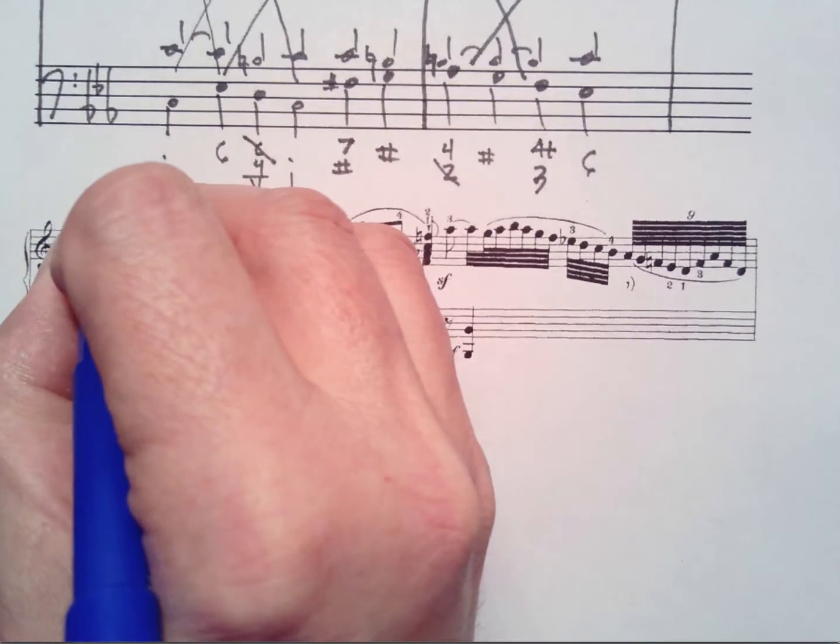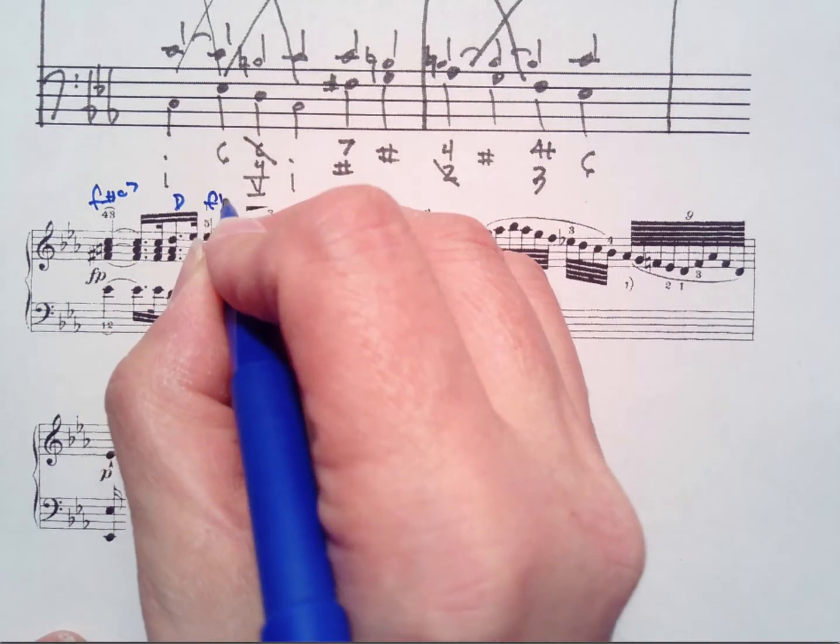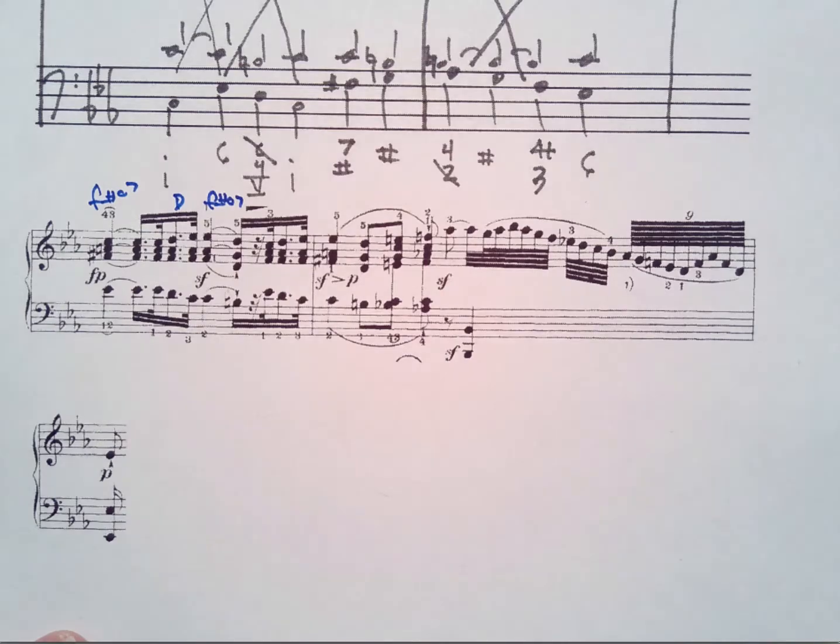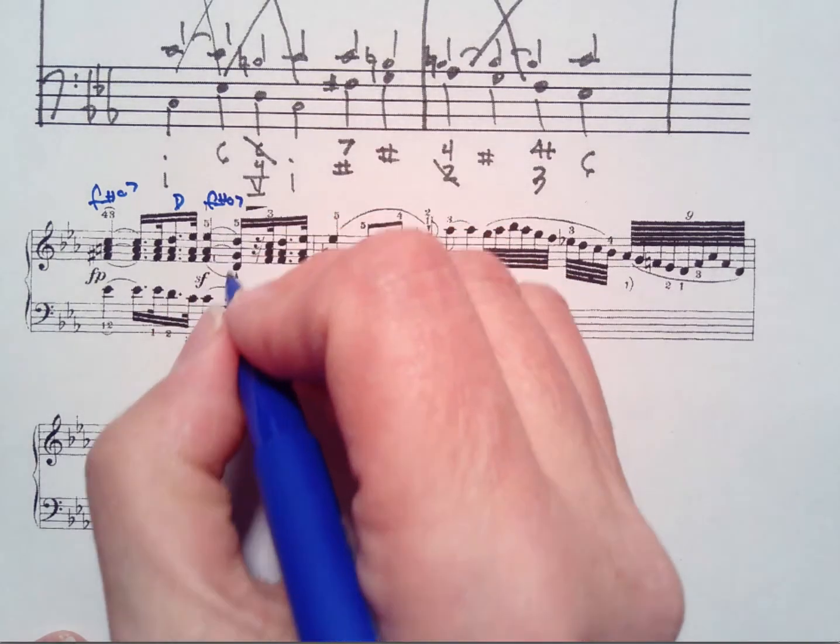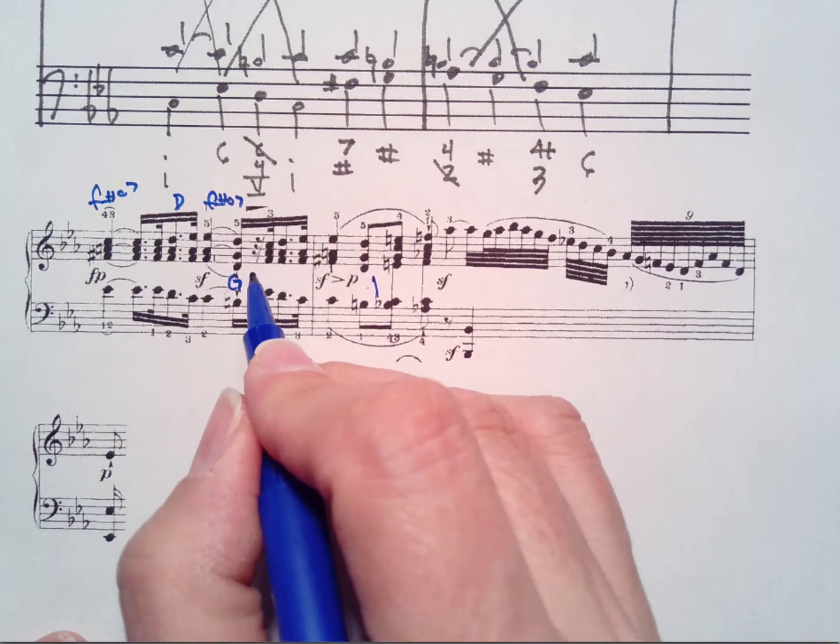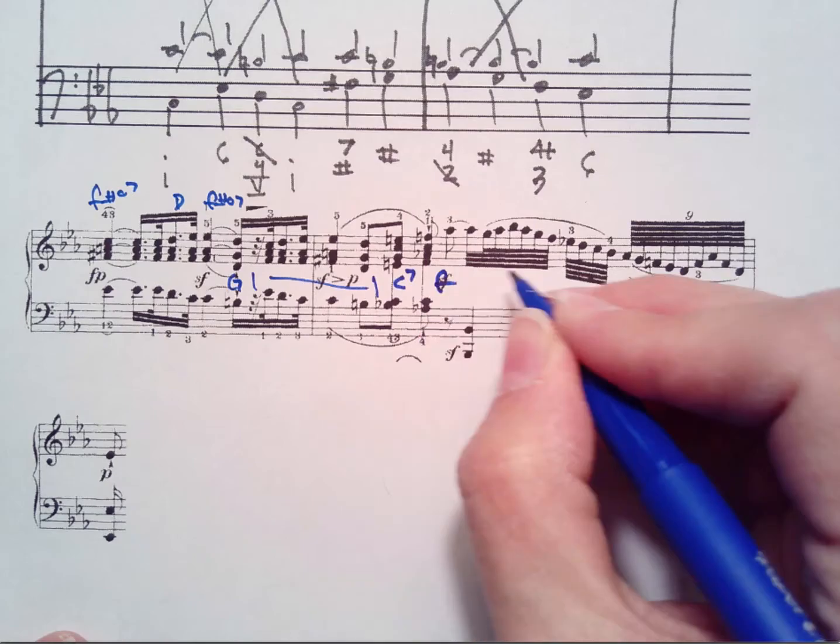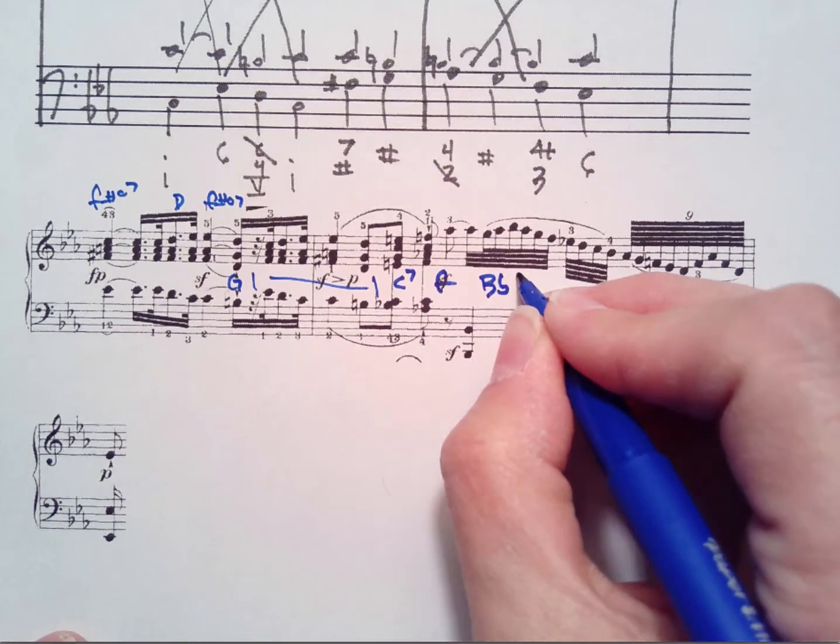This is F-sharp fully diminished seven, D major, F-sharp fully diminished seven, and G major. That repeats through here, same progression. Then we get a C7, F minor, B-flat seven.